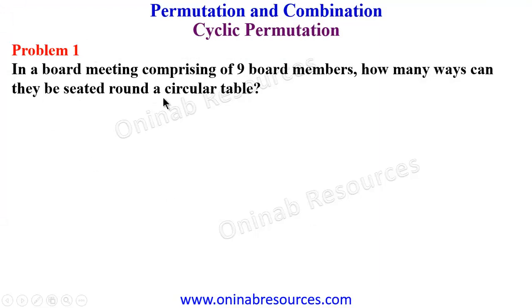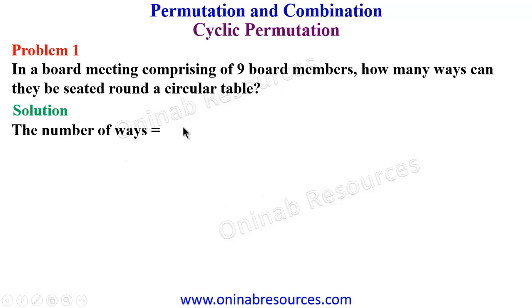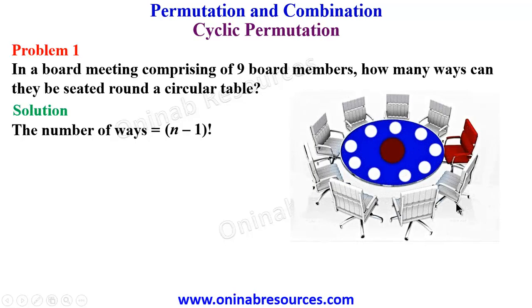Problem 1: In a board meeting comprising 9 board members, how many ways can they be seated round a circular table? We told us initially that the number of ways is going to be (n minus 1) factorial, where our n is 9. The clear explanation is shown in this picture.